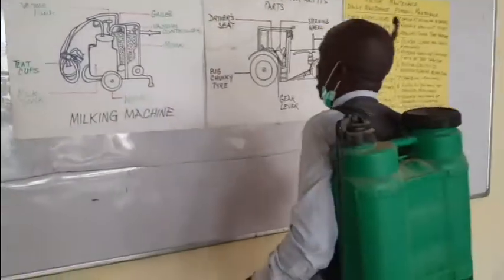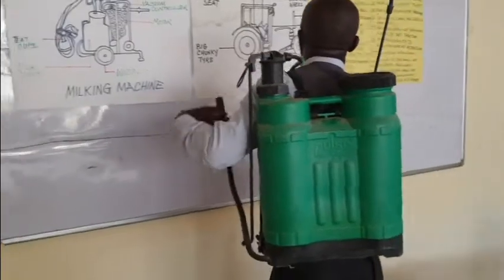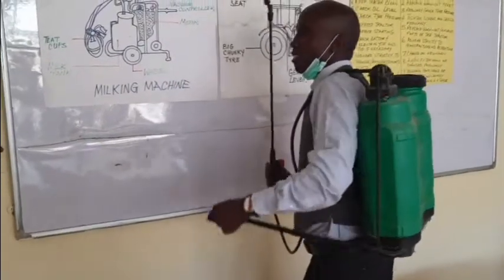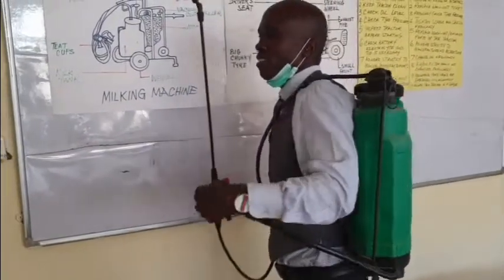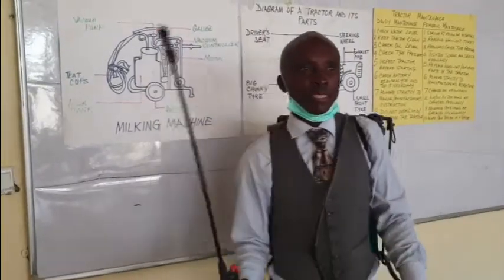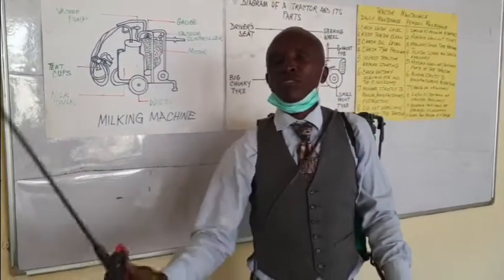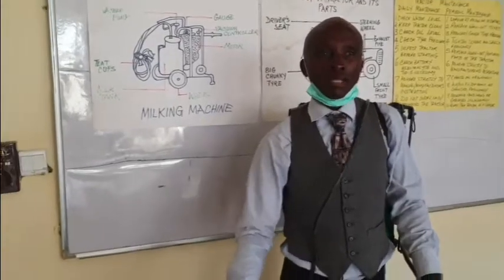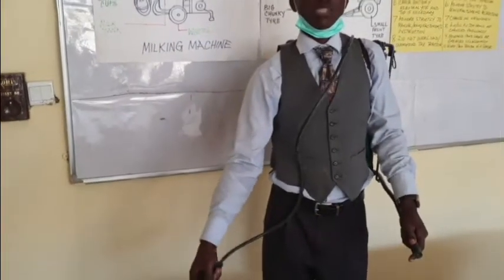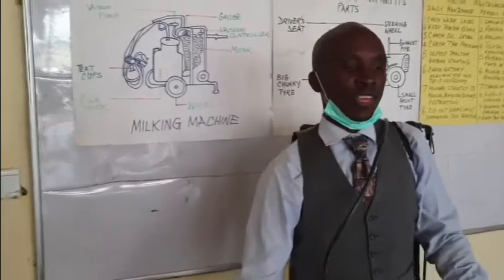So this is the knapsack sprayer. When you see the farmer using it, you will see him smiling because he's not using too much energy. You can also use it to spray pesticides or for irrigation of gardens when you want to sprinkle water on the farm.